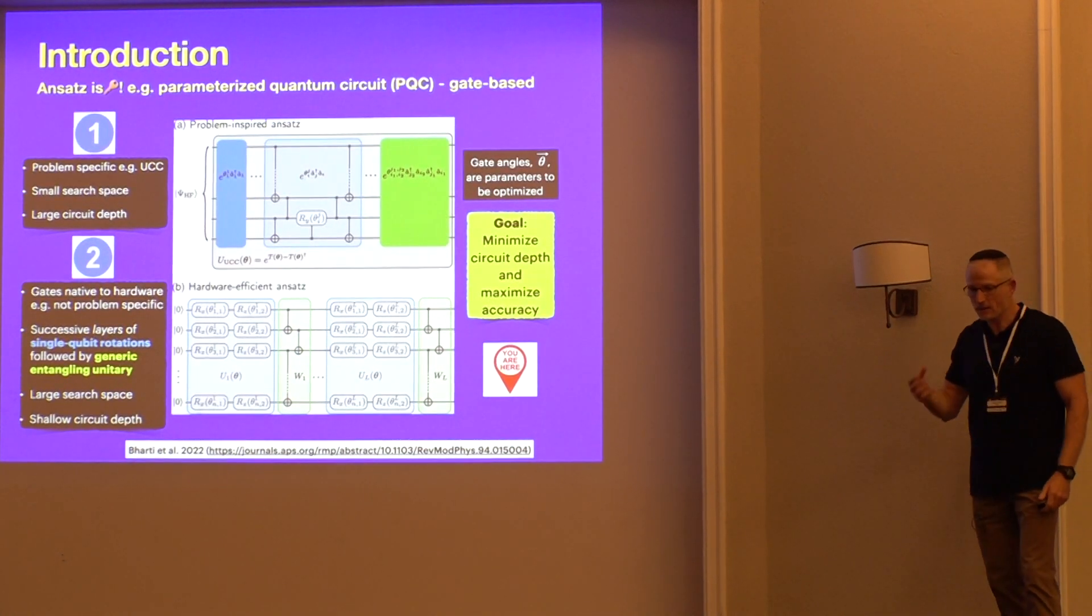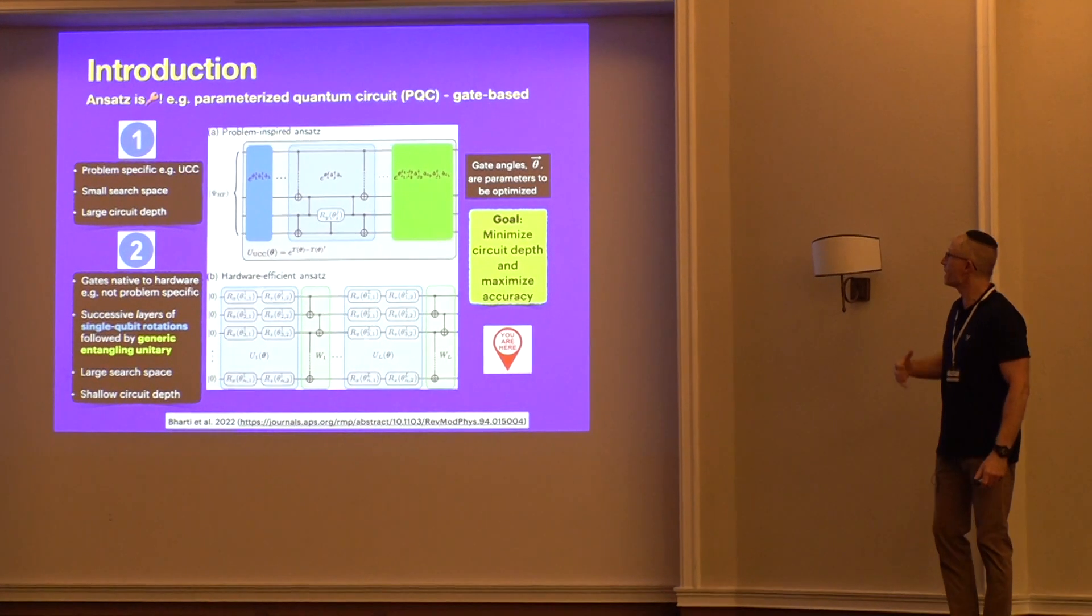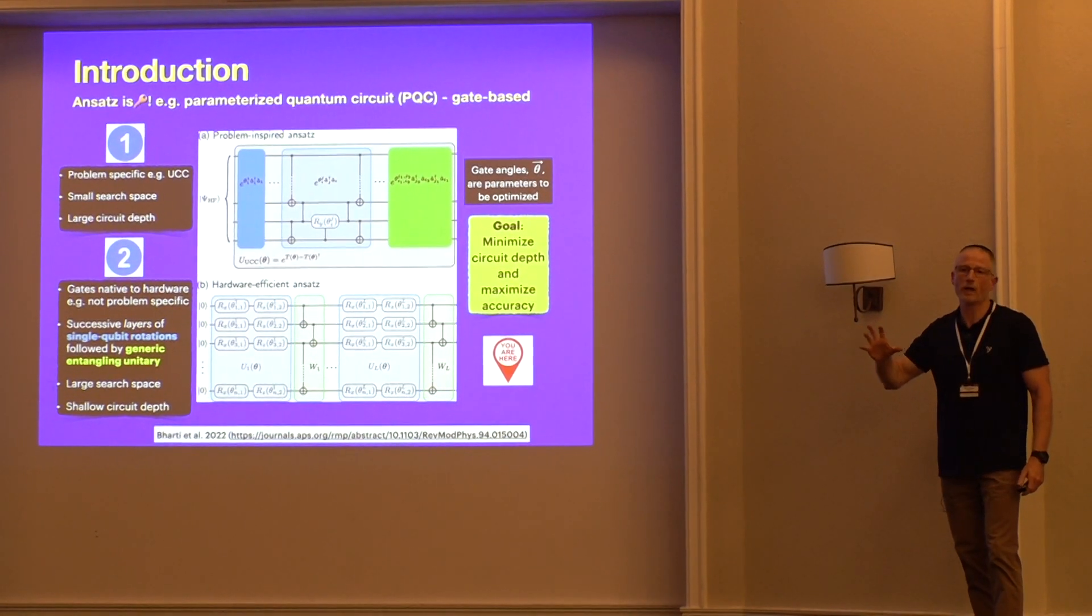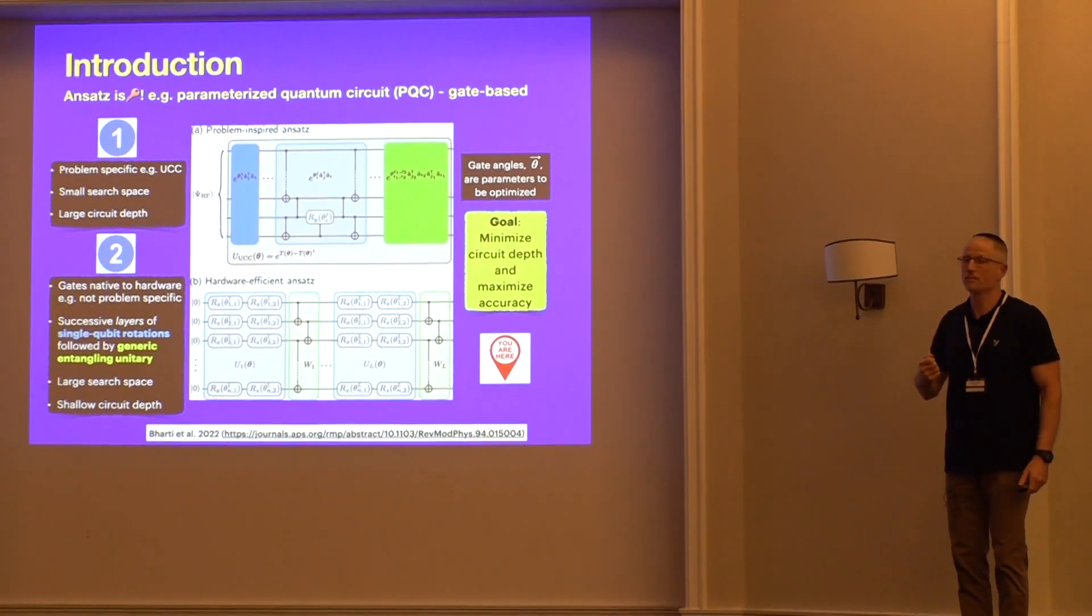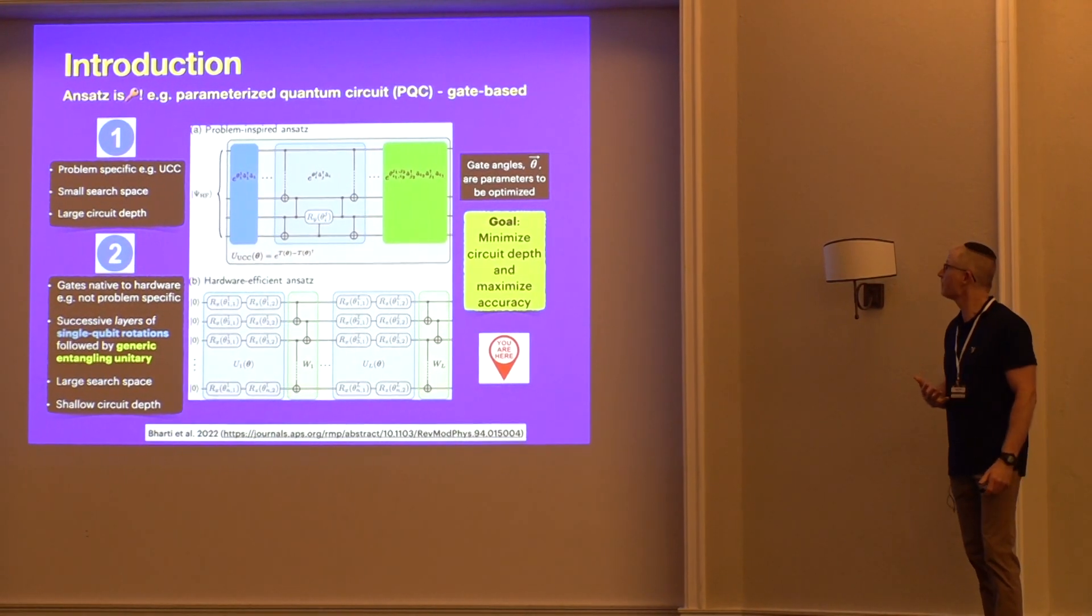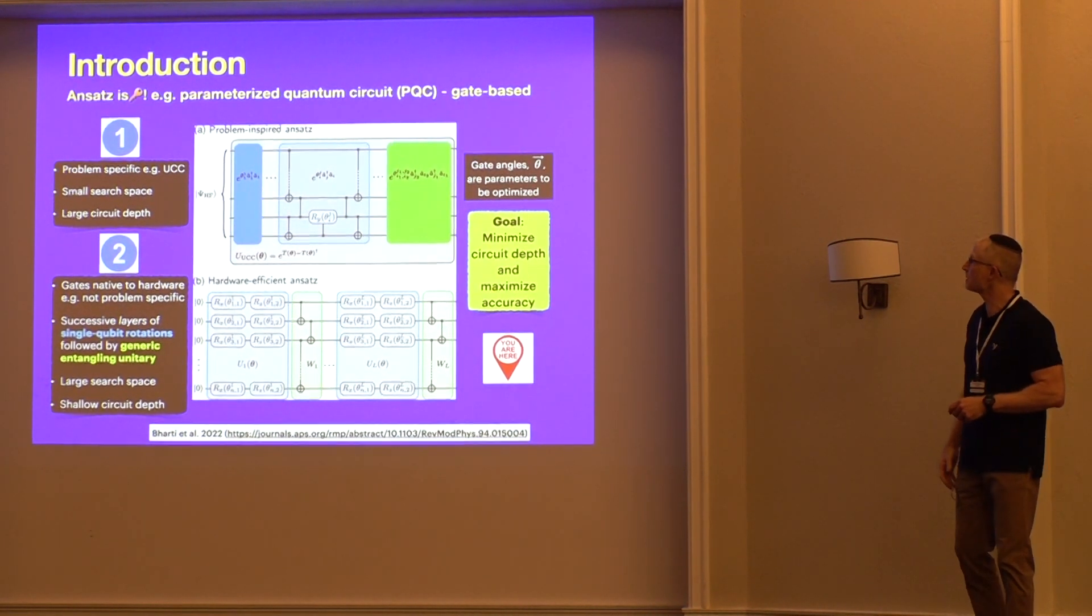With regard to the ansatz, it's really the key to the whole algorithm, the success or failure. As I mentioned, it takes the form of a parameterized quantum circuit. The main parameters in this circuit are the gates and the gate angles, basically. There are two main categories of these ansatz.